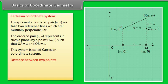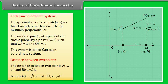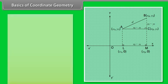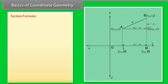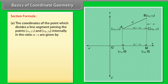Distance Between Two Points: The distance between A(X1, Y1) and B(X2, Y2) is given by: AB = √[(X2 − X1)² + (Y2 − Y1)²].